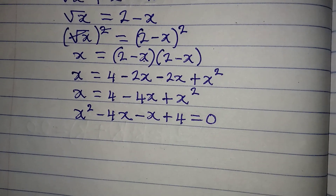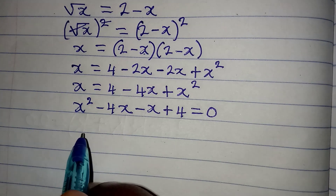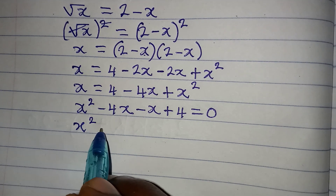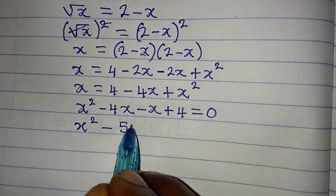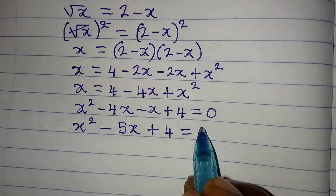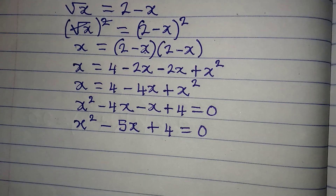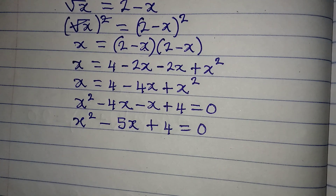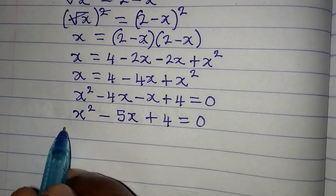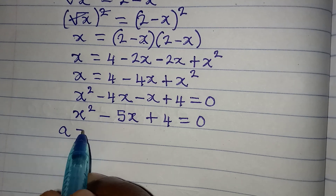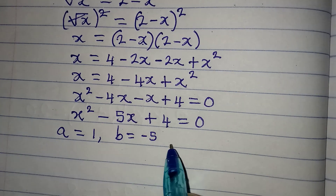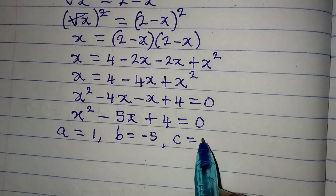Now we have a quadratic equation: x squared minus 5x plus 4 equals 0. We can solve this using the quadratic formula.